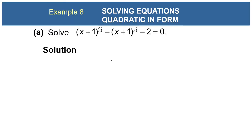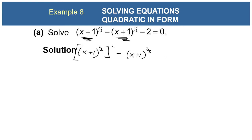Example 8: solve (x+1)^(2/3) - (x+1)^(1/3) - 2 = 0. If you look carefully, this kind of looks like a quadratic. Let's rewrite it as [(x+1)^(1/3)]² - (x+1)^(1/3) - 2 = 0. Notice it has a power of 2, just like we want, so we can simplify easily.